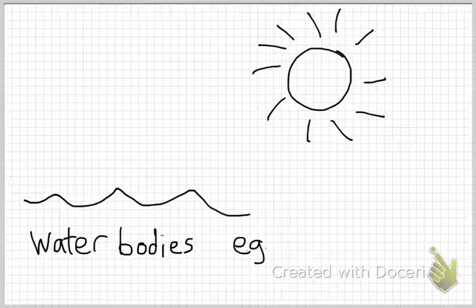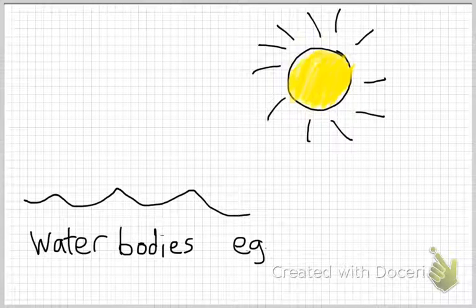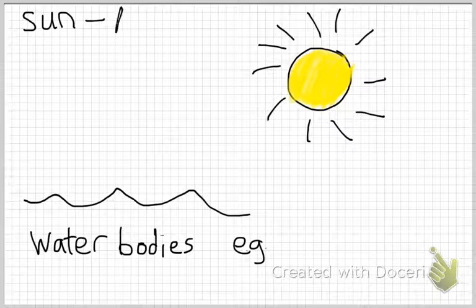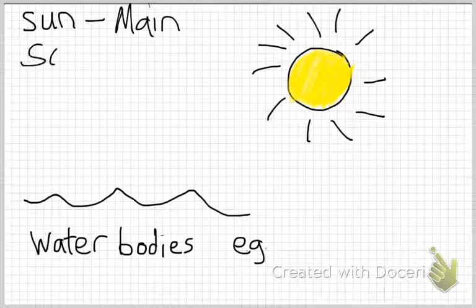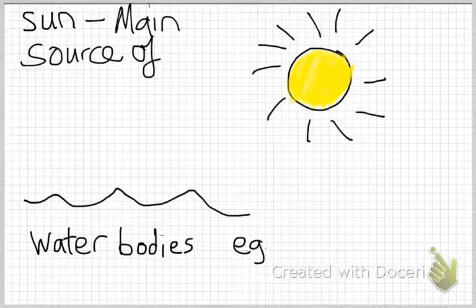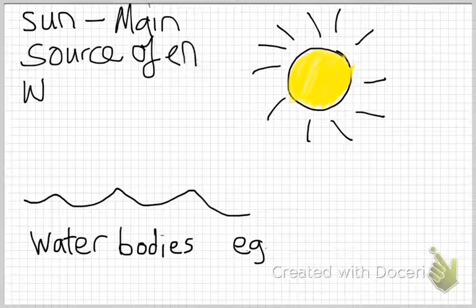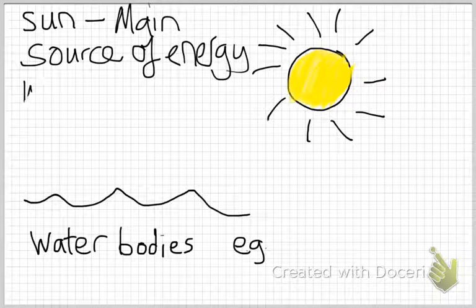Before we go on with water cycle, we must remember the main source. Can somebody tell me what is the main source of water cycle? The Sun! That's right — the Sun. I'm going to colour the Sun here. The Sun is the main source of the water cycle. Without the Sun there will be no water cycle. The Sun provides heat — it is the main source of energy for the water cycle.